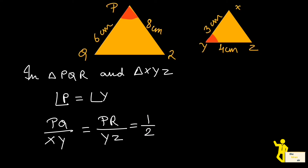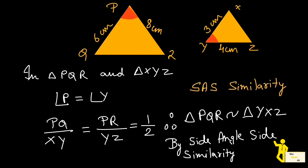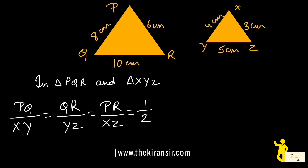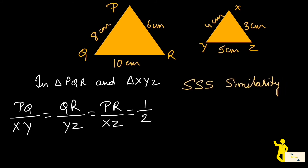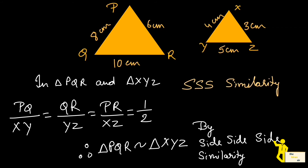For SAS similarity — Side Angle Side — if two corresponding sides are in the same ratio and the angle between those two sides is also equal, then the triangles are similar by SAS. Remember, the angle must always lie between the two sides. For SSS similarity, if all three corresponding sides of two triangles are in the same ratio, then those triangles are similar by Side Side Side similarity.